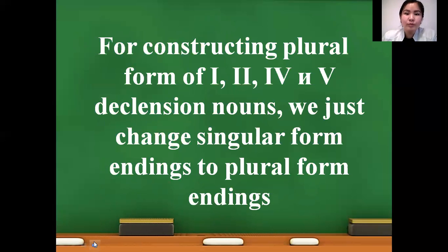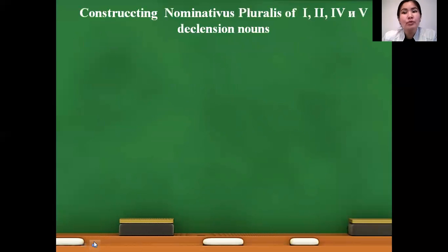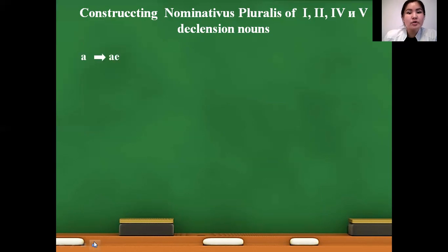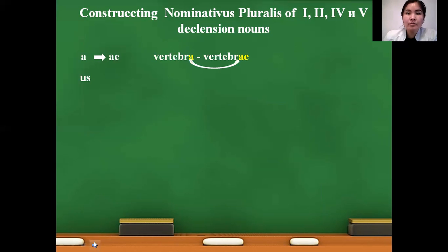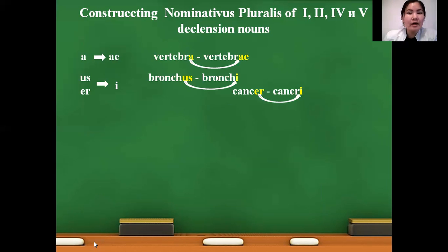For constructing the plural form of first, second, fourth and fifth declension nouns, we just change singular form endings to plural form endings. In first declension, ending -a we change to ending -ae. So: vertebra, pluralis — vertebrae. In second declension masculinum, endings -us and -er we change to -i. So: bronchus, pluralis — bronchi; and cancer, pluralis — cancri.